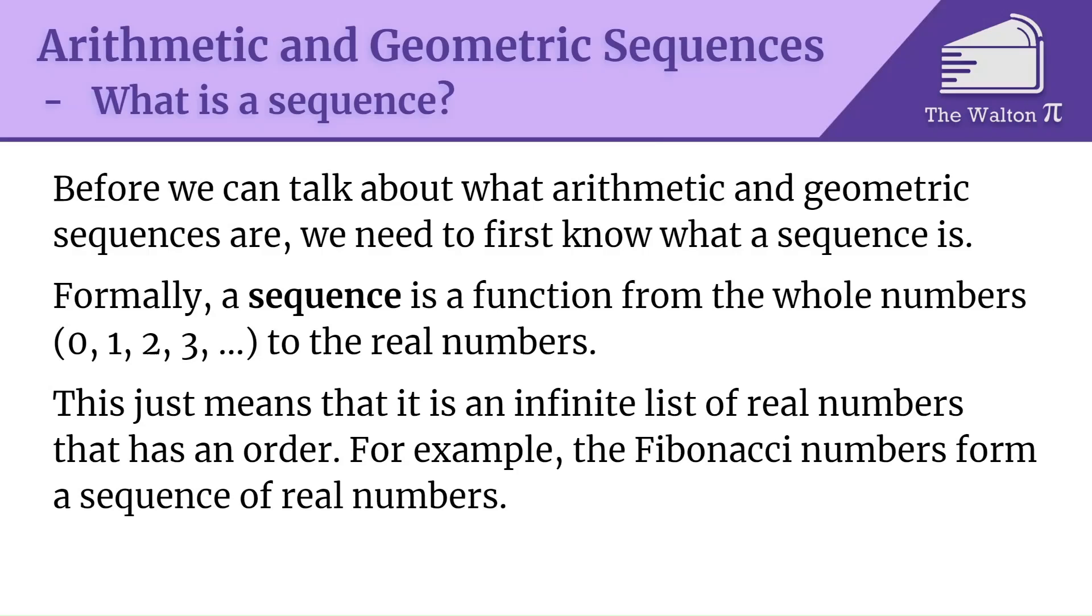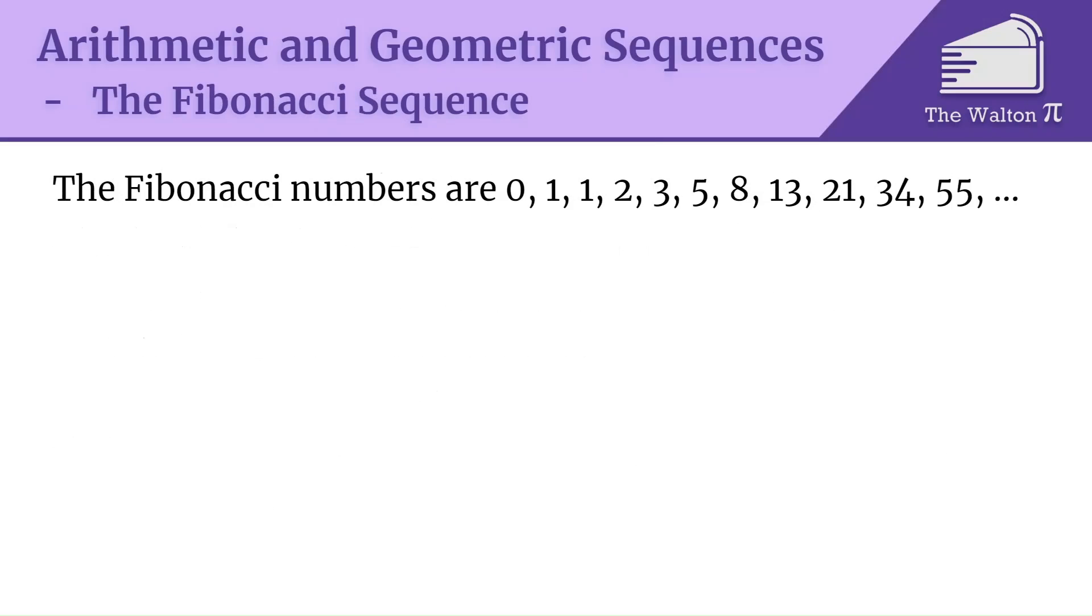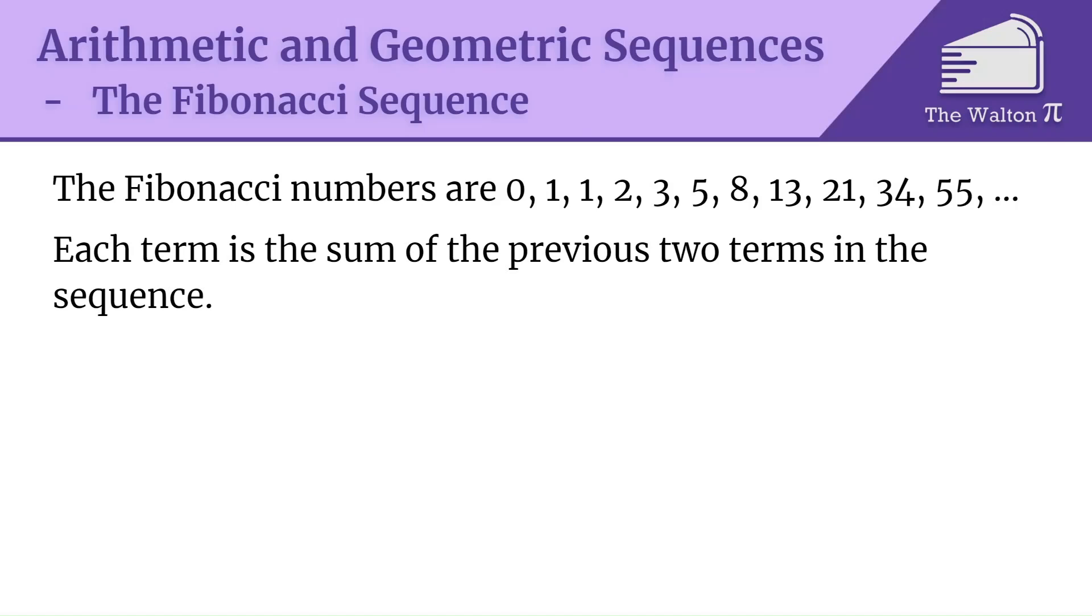For example, the Fibonacci numbers form a sequence of real numbers. The Fibonacci numbers are 0, 1, 1, 2, 3, 5, 8, 13, 21, 34, 55. If you want to know all of them, I have a video where I list the first 100 in 11 minutes. The way that the Fibonacci numbers are formed is each term is the sum of the previous two terms in the sequence.